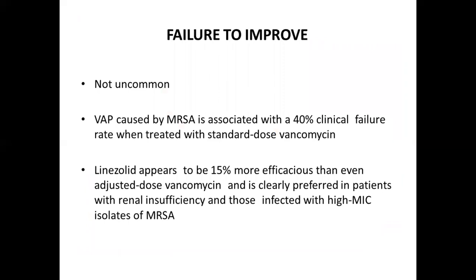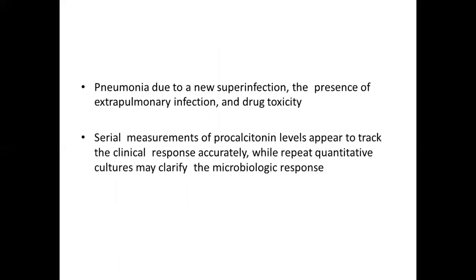Failure to improve is not an uncommon phenomenon in patients with ventilator-associated pneumonia, and is usually due to methicillin-resistant Staphylococcus aureus. For such cases, start treatment with standard dose vancomycin. Also find out if there are other reasons for failure to improve, such as new superinfection, extrapulmonary infection, or drug toxicity. Serial measurements of procalcitonin levels help track clinical response, and repeat quantitative cultures may clarify the microbiological response.